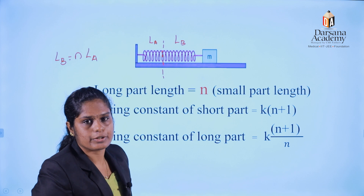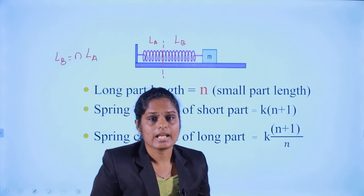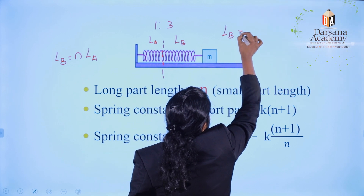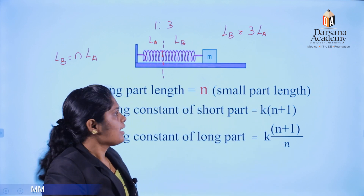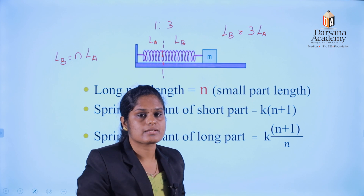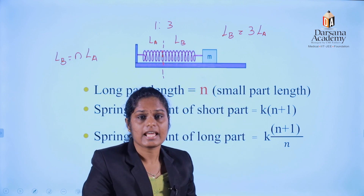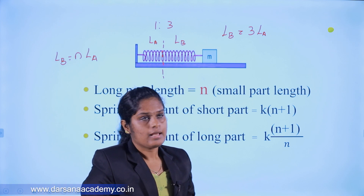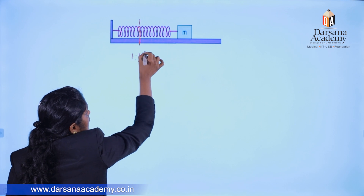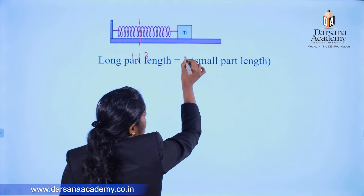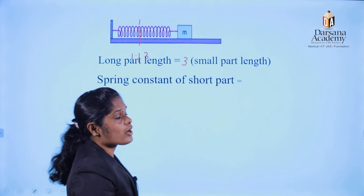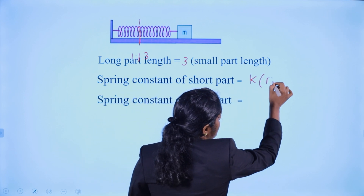The larger part length is equal to n times the small part length. That is, L_b is equal to n times L_a. What is the ratio of 1 to 3? The larger part is 3 times the smaller part. So if the ratio is 1 to 3, then n equals 3 and k into (n+1) gives us 4k.